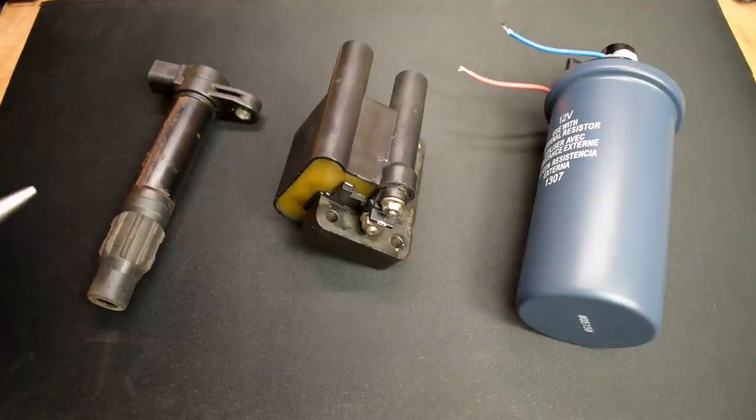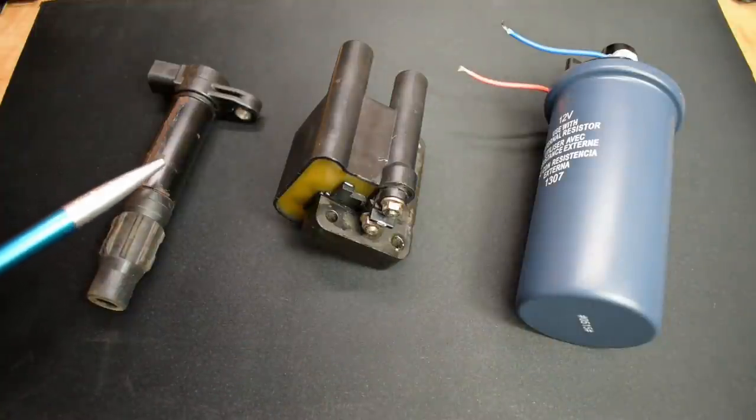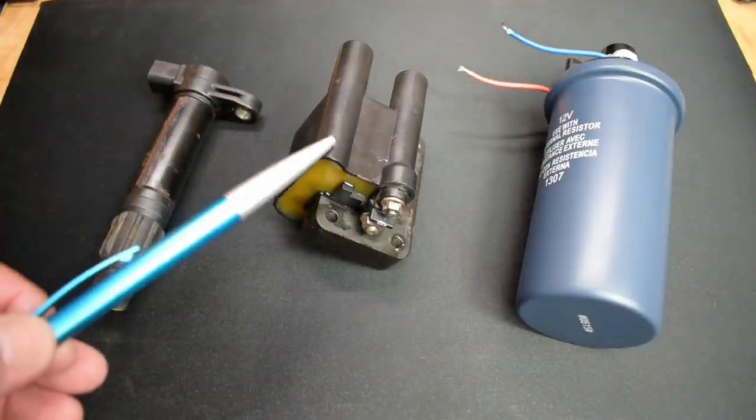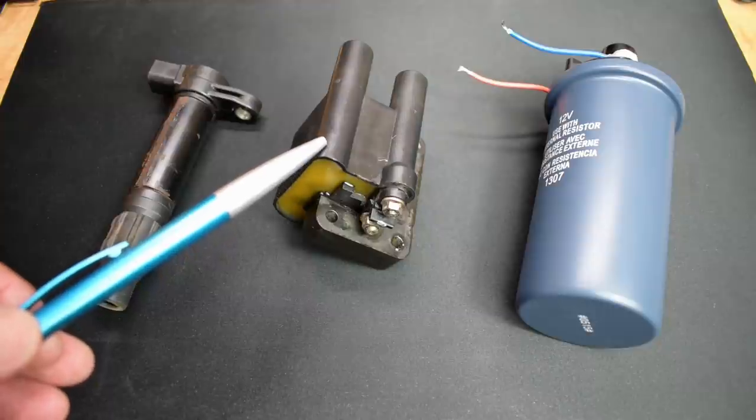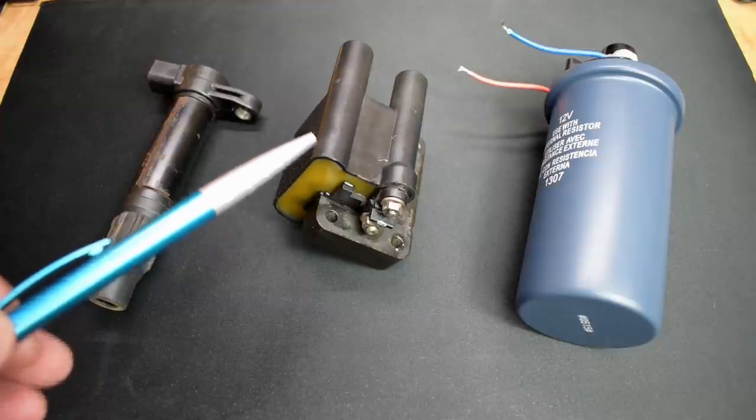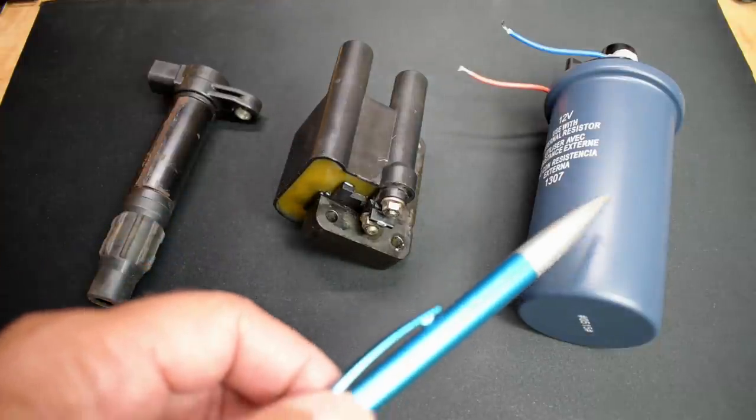To demonstrate in this video, I have three different types. This one here is from a Yamaha four-cylinder jet ski. This is off of a V6 2.7 liter Hyundai Sonata engine. And over here, this is off of an older boat.